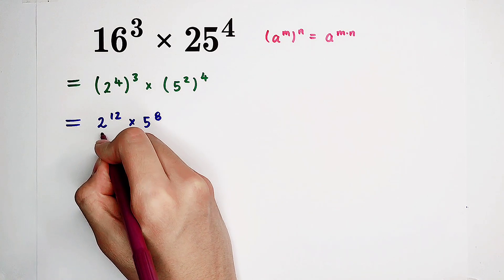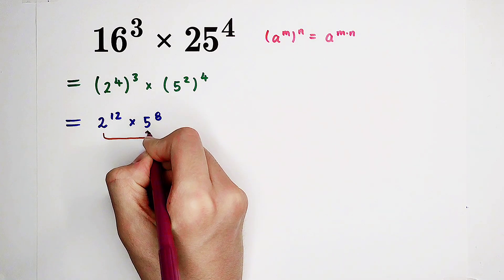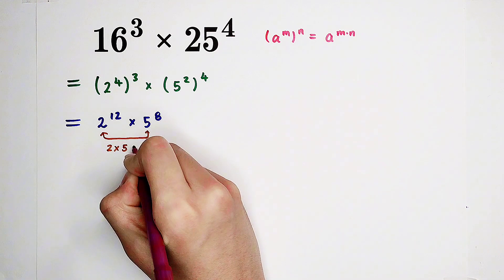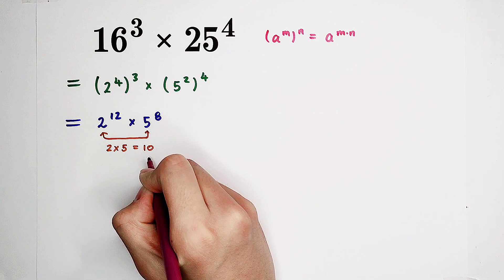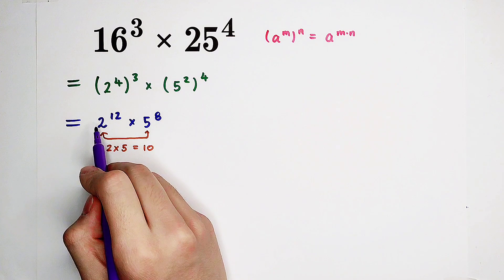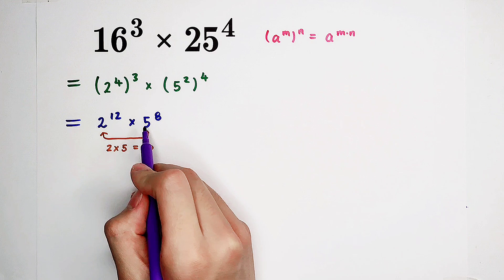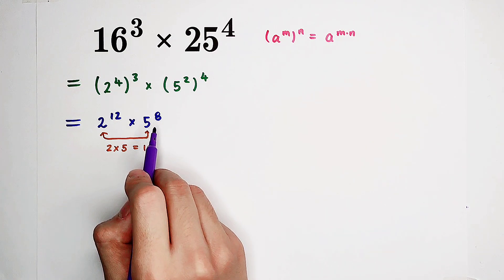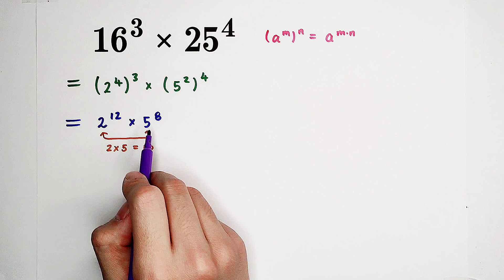We notice that the product of 2 and 5 is 10. And this is a very nice number. However, they don't have the same power. So now, I have to make them have the same power.